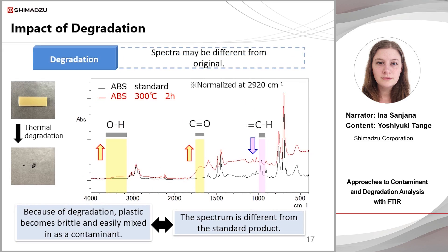There may also be spectral changes due to degradation. This example shows acrylonitrile butadiene styrene, or ABS, processed in an oven at 300 degrees for two hours. When plastics are degraded, they crack and lose flexibility, and inevitably get mixed in as contaminants. The spectrum of a degraded product is different from the spectrum of the standard product. Peaks of OH and C=O double bonds due to oxidation are particularly noticeable in heat degradation, so searching the standard library will not result in the best match.